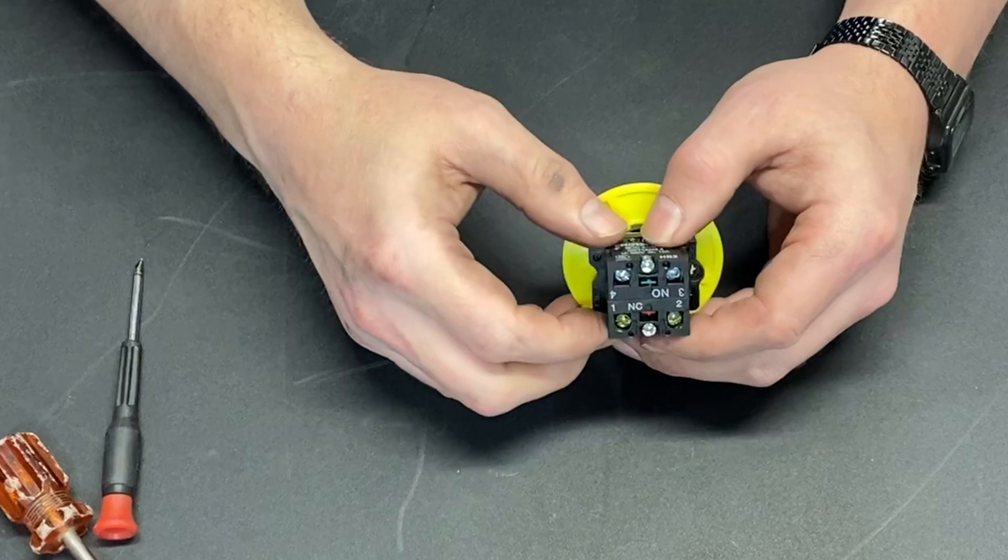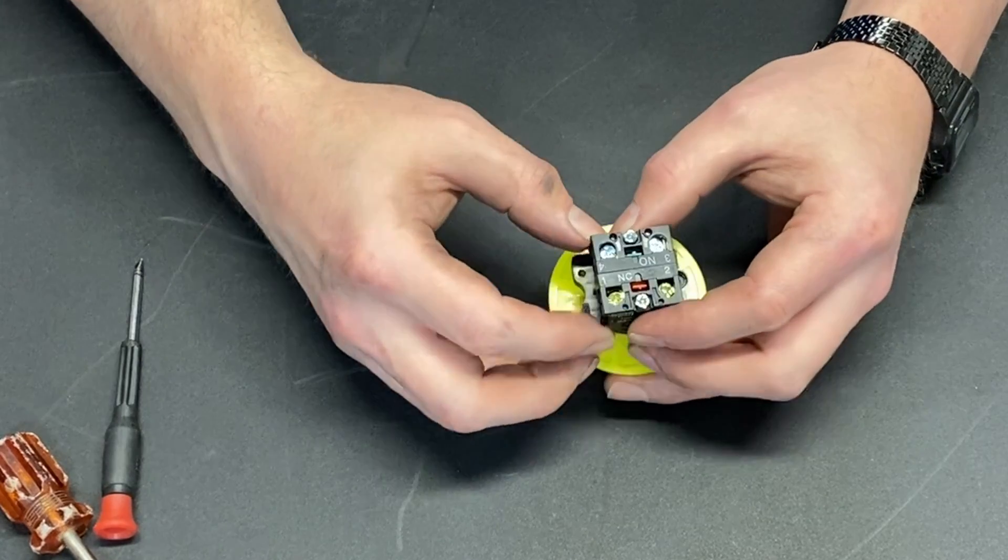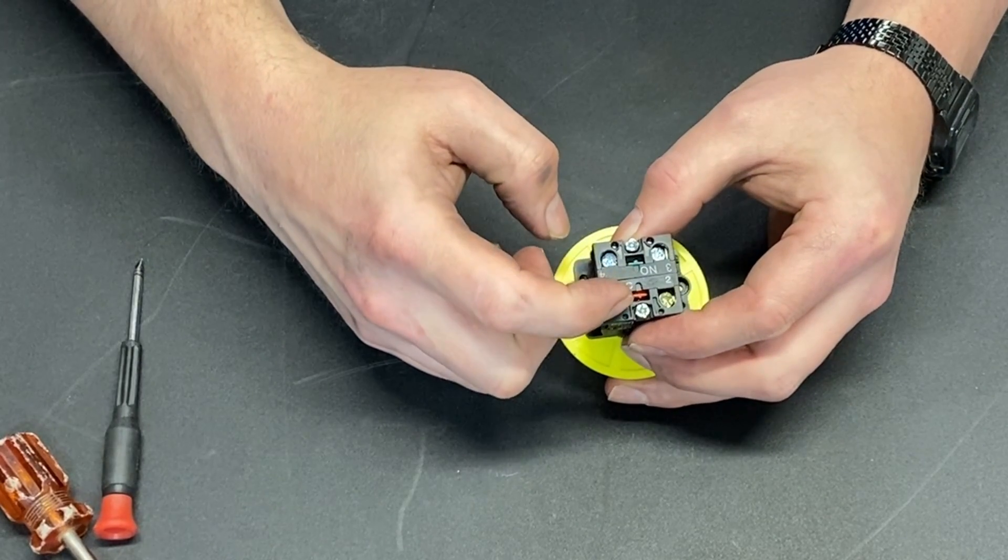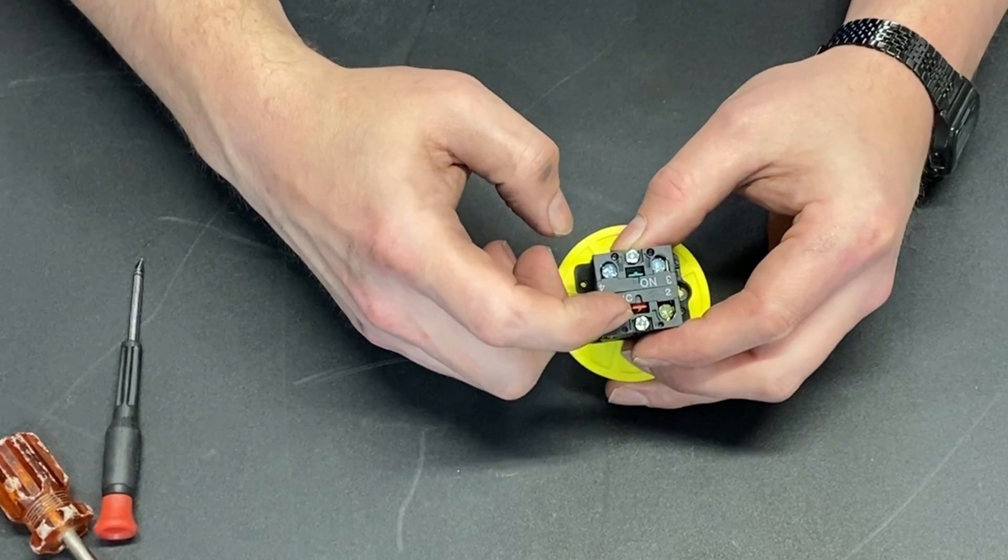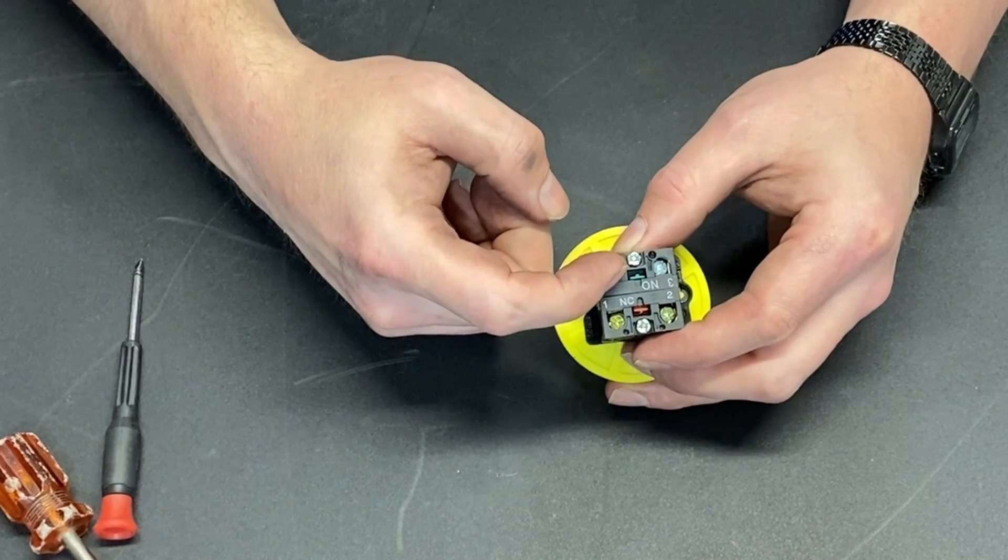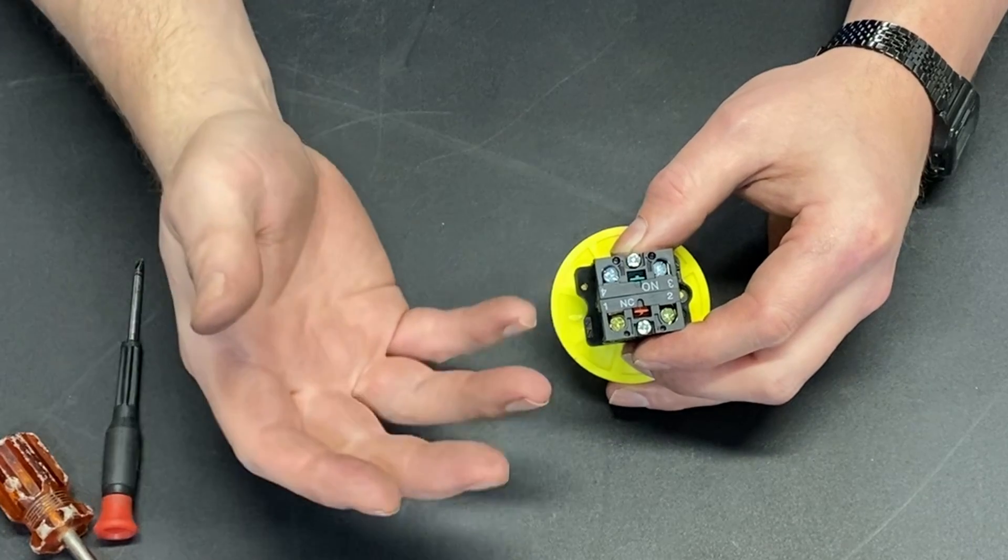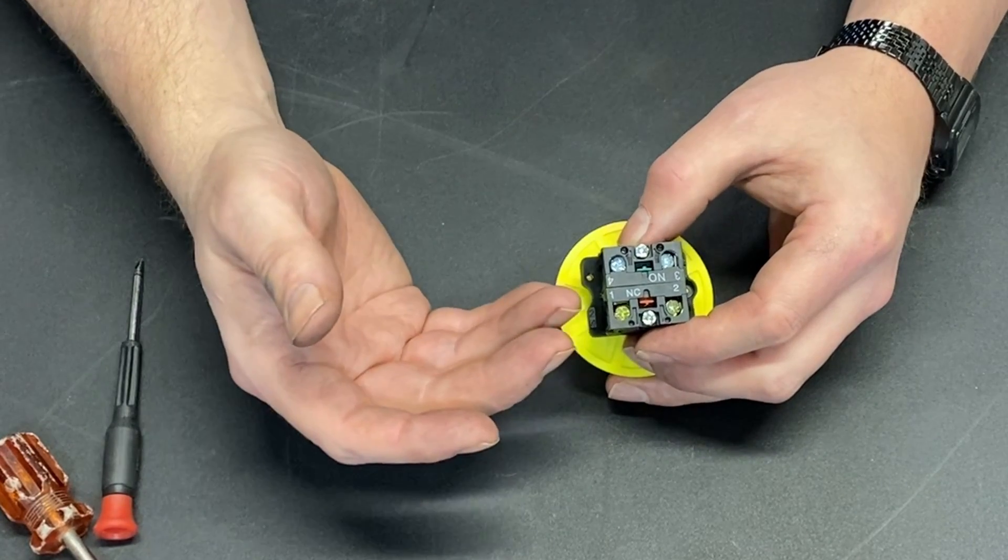When we push the button and hit emergency stop, this one that is normally closed is now open. And this one that is normally open is now closed. Now, why would they do that? Well, it's really pretty simple.